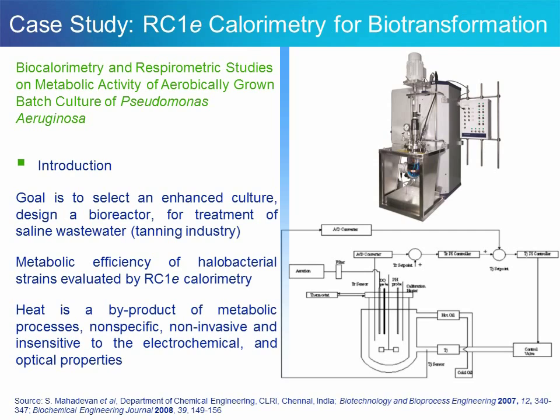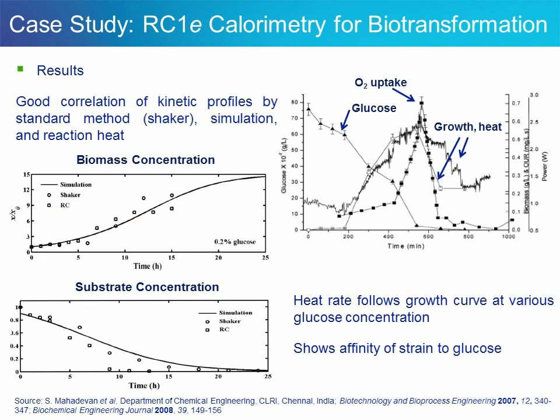A standard 1-liter RC1 vessel was used, equipped with a pH probe and a dissolved oxygen probe. The authors determined biomass growth and substrate consumption using two experimental methods, including RC1 heat measurement and a simulation method, and the results from the three different methods correlated well. They then overlapped glucose consumption, oxygen uptake, biomass growth, and heat for the same experiment. As biomass grows, so do oxygen uptake and detected heat, all peaking at the same time, as you can see.